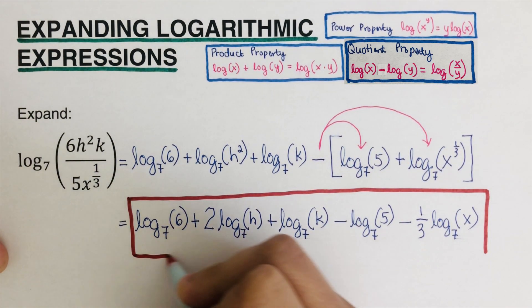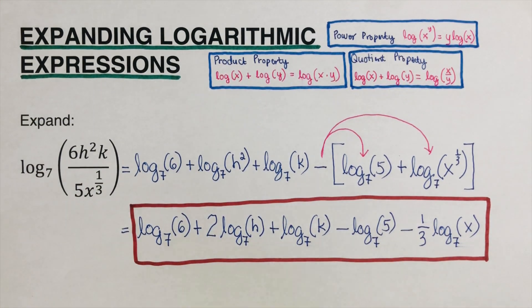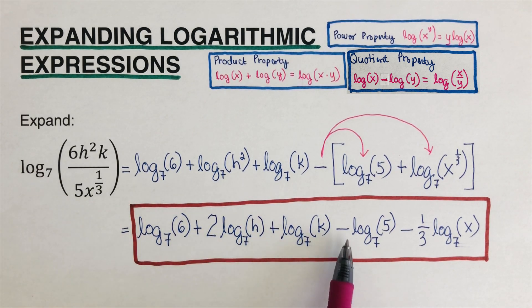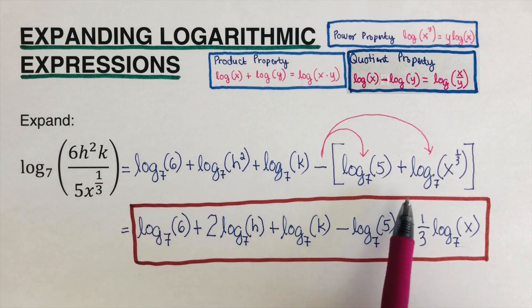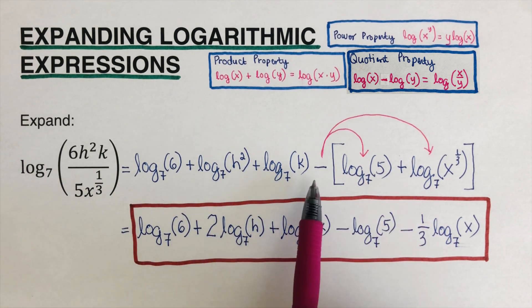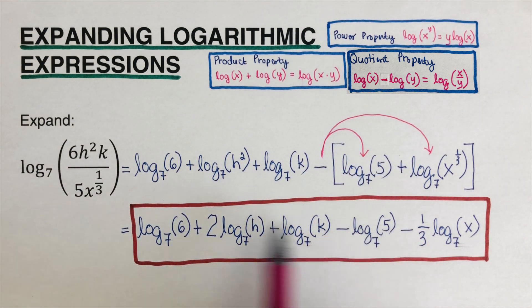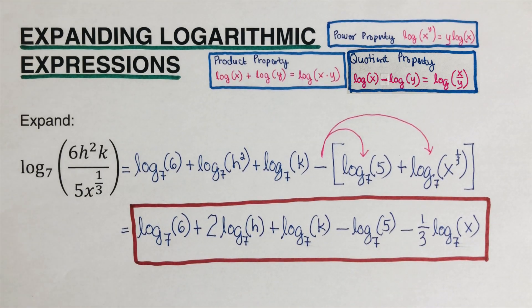This is the expanded version of that. Here's a trick: anything that is in the denominator will be subtracted when we expand it. As you can see, it becomes minus 5. Although we started with a plus, since those two are multiplied together, when we distribute the minus it all comes out negative. So anything on the denominator will have a negative sign — that is the fastest way.